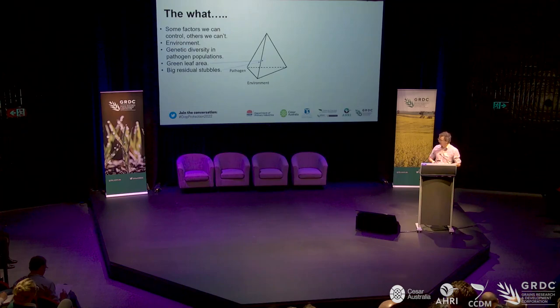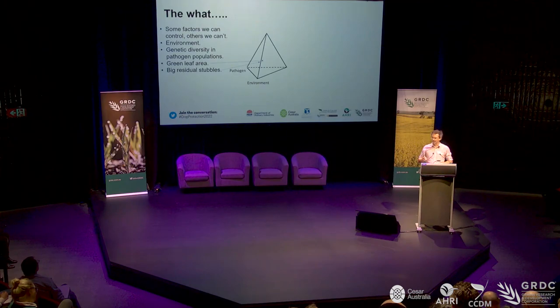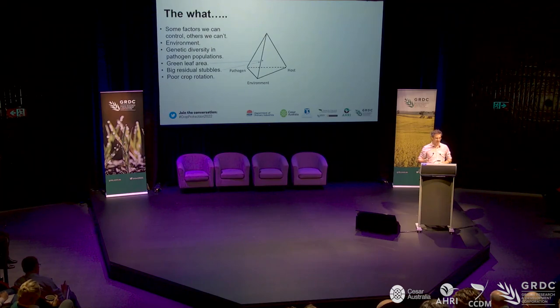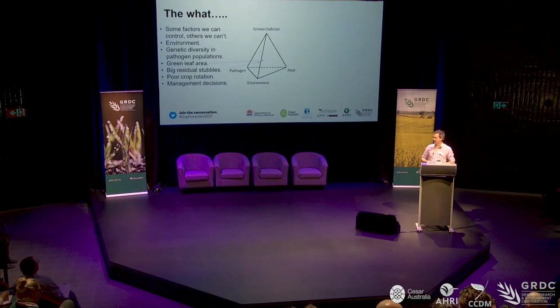Thirdly and fourthly, other factors such as green leaf area and big bulky crops can drive humidity and leaf wetness to drive disease. The result of those big crops is big residual stubbles, which can harbour stubble-borne diseases over summer. Some of these six points don't fit neatly into one spot. The decisions or levers we pull can influence these — poor crop rotation, putting a susceptible host into a hostile environment. Proper rotation and break crops break down the stubble, reduce the pathogen load, and give the wheat crop the best chance.